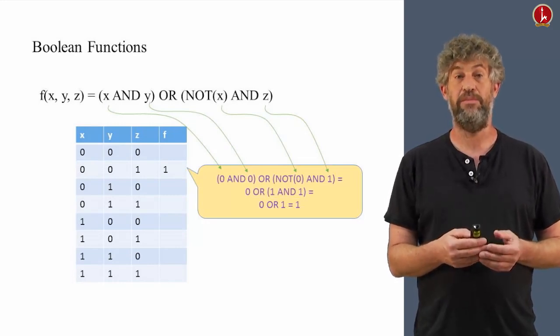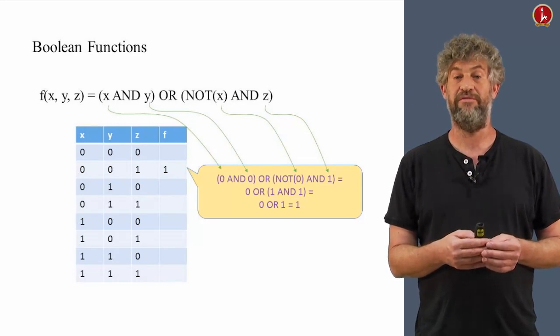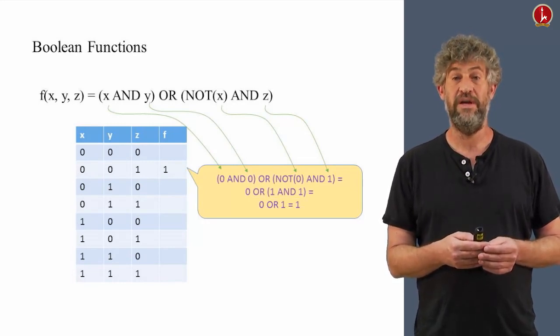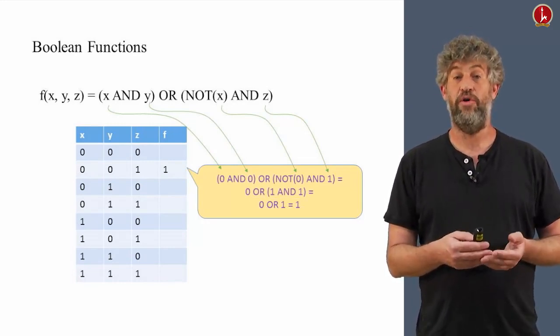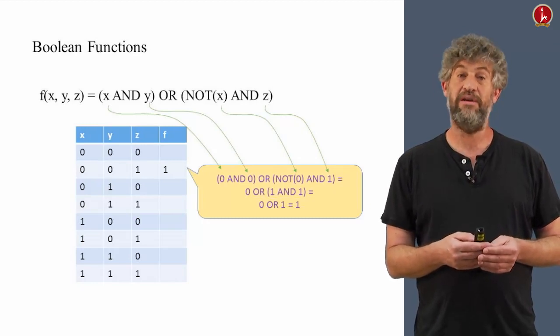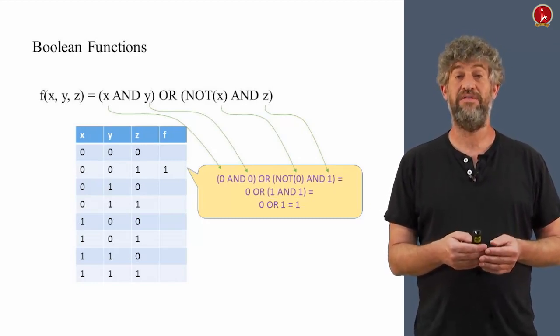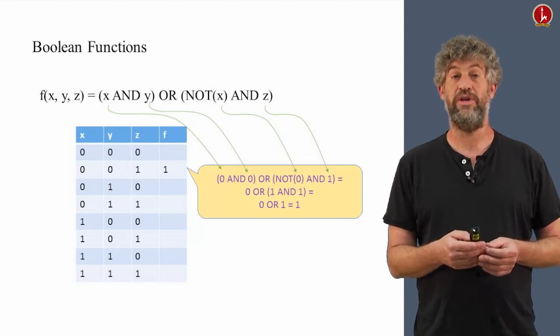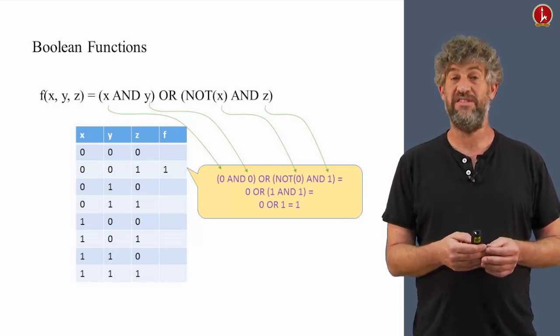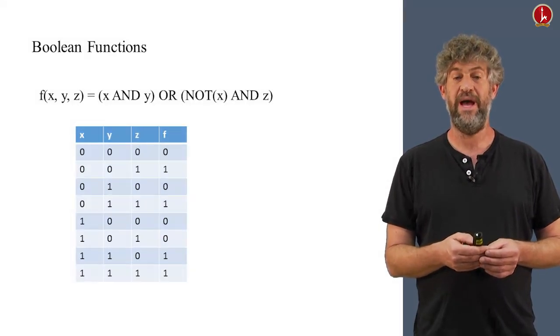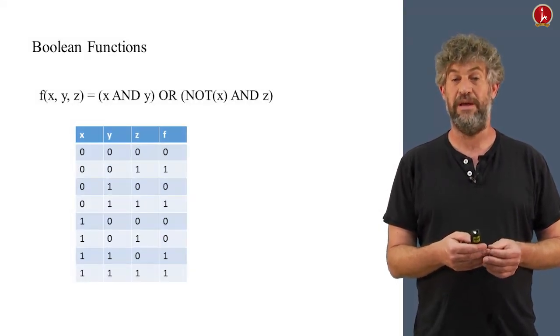Every time we have an x, we put a 0 there. Every time we have a y, we put a 0 there. Every time we have a z, we put a 1 there. And now we just get a formula with constants in it. And we can evaluate it just like we did in the previous slide. And we can figure out that the second row should get the value of 1. We can do this similarly for each one of the possible rows and completely fill the table.